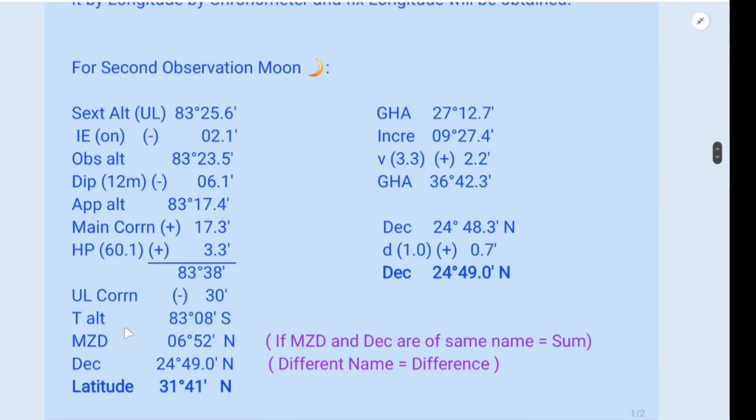So if you subtract this true altitude from 90 degrees you will get MZD, that is meridian zenith distance as 06 degrees 52 minutes north. And if MZD and declination are of same name then we have to add together. If they are of different name then difference. So here MZD and declination are of same name. So that is why we add together and we got the latitude as 31 degrees 41 minutes north.